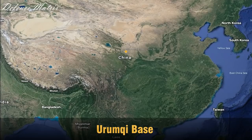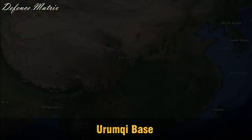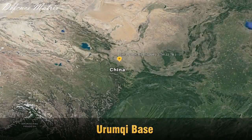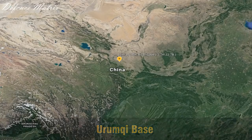Urumqi Base काफी छोटा base है — जैसा कि map में देख सकते हैं, खाली एक dot दिखता है। यहाँ पर इनका एक ही squadron है। Zoom करके देखें तो यहाँ पर इनकी 18th Air Brigade है, जिसमें J-7 और उसके variants हैं — फिर से पुराने aircraft।